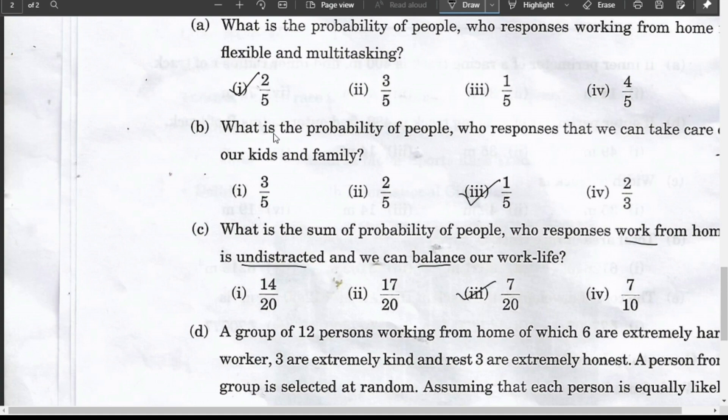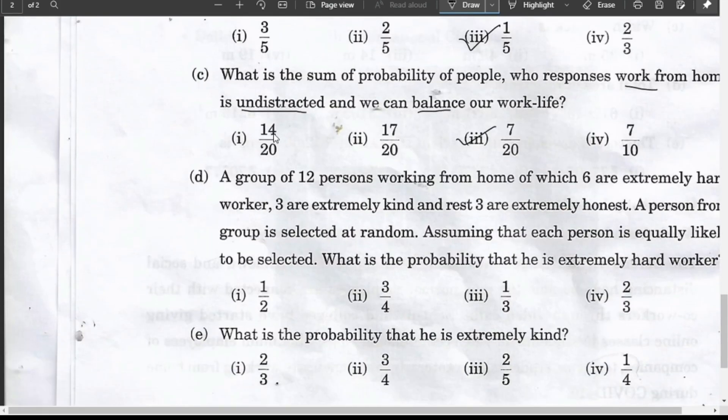Question (d): A group of 12 persons working from home, of which 6 are extremely hard workers, 3 are extremely kind, and the rest, 3, are honest. So total number of persons is 12. This question is not related with the data given in the above table - this is a separate part. Assuming that each person is equally likely to be selected, what is the probability that he is extremely hard worker?